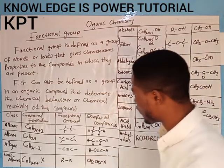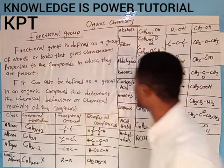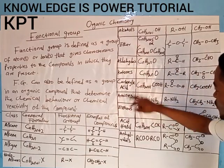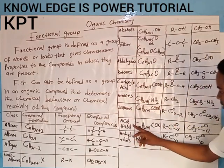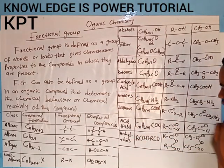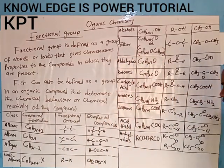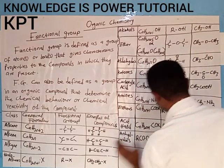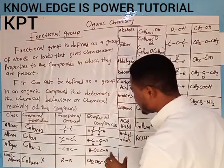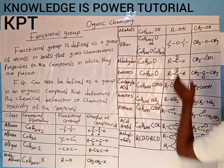So I have here on the board the alkanes, the alkenes, the alkynes, the haloalkanes, the alcohols, the ethers, the aldehydes, the ketones, the carboxylic acids, the amines, the esters, the acid halides, and the anhydrides. All of these which I have here are their general formulas, and all of these are their examples of such compounds.